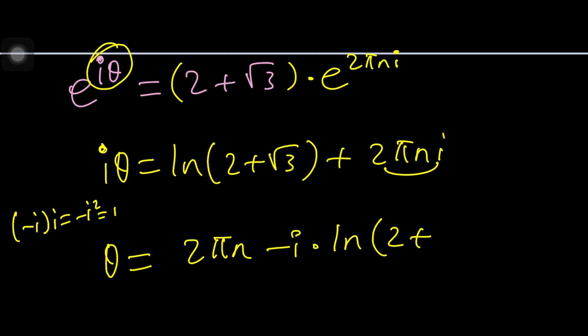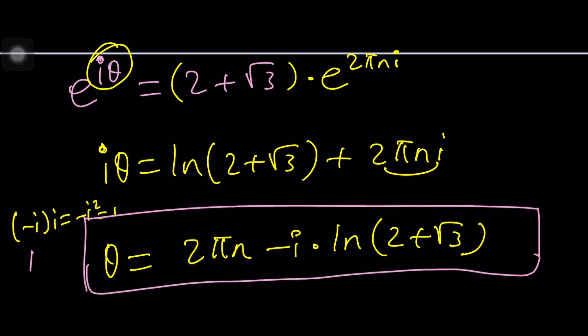So that's going to give us theta equals 2 pi n minus i times ln 2 plus root 3. So that's going to be the value of theta for which cosine theta equals 2, but there's another value which you can evaluate. I hope I haven't made this problem before, because it kind of looks familiar. But anyways, I apologize if I did. It's been a while. And this brings us to the end of this video.